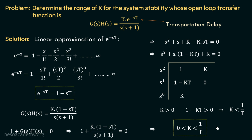This was a simple problem, but the open loop transfer function included a transportation delay — an exponential term. Before applying the RH criteria, we performed the linear approximation of e power minus st using the Taylor series expansion of e power minus x. After this, we followed the standard procedure to find the characteristic equation and form the Routh array, then applied the RH criteria to obtain the range of k for system stability. This was the last problem in this chapter; from the next lecture, we will move on to time response analysis.